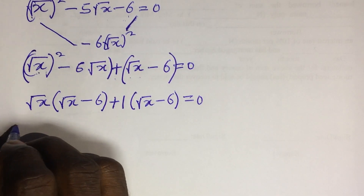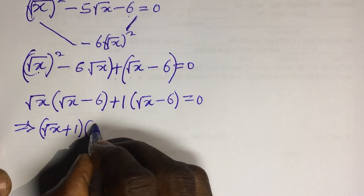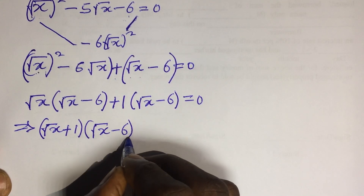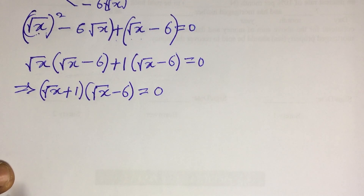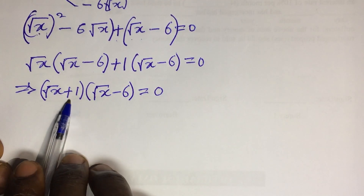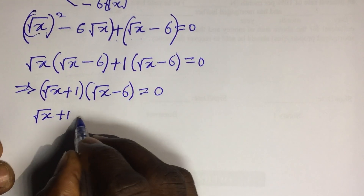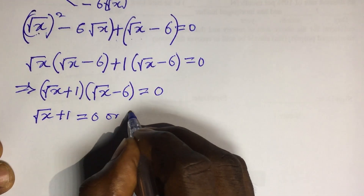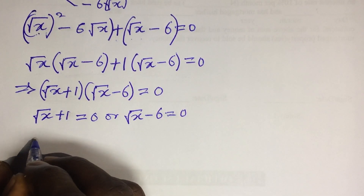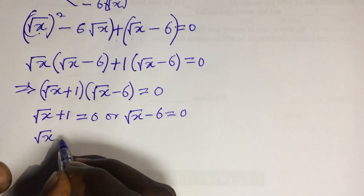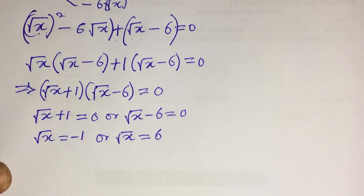Since the brackets are the same, we take the outer terms and one bracket: (√x + 1)(√x minus 6) equals 0. Now we apply the zero product rule, setting each factor to zero: √x + 1 = 0 or √x minus 6 = 0, giving √x = minus 1 or √x = 6.